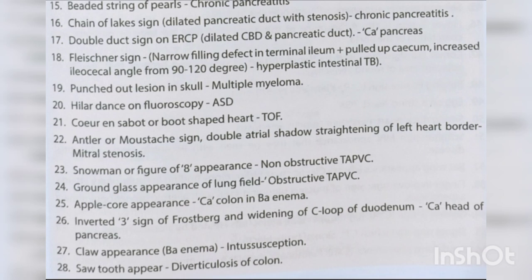Antler or mustache sign, double atrial shadow, straightening of left heart border — mitral stenosis. Snowman or figure-of-eight appearance — non-obstructive TAPVC. Ground glass appearance of lung field — obstructive TAPVC.